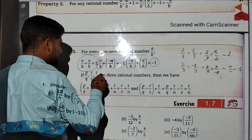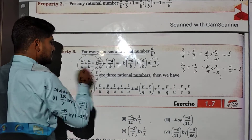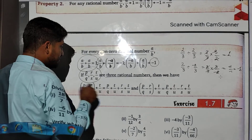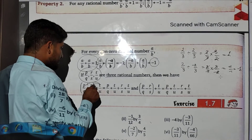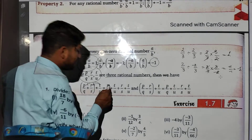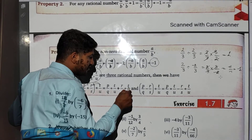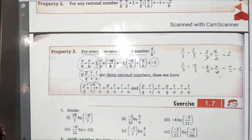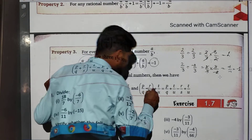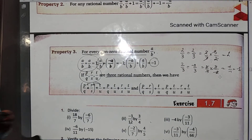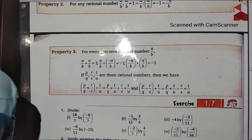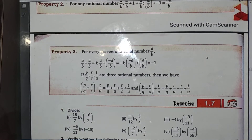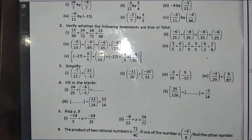If p/q, r/s, and t/u are three rational numbers, then (p/q + r/s) divided by t/u equals p/q divided by t/u plus r/s divided by t/u. If we take a negative sign, the result is the same with the negative sign applied. This is the distributive property of division. Your homework is to complete Exercise 1.7.